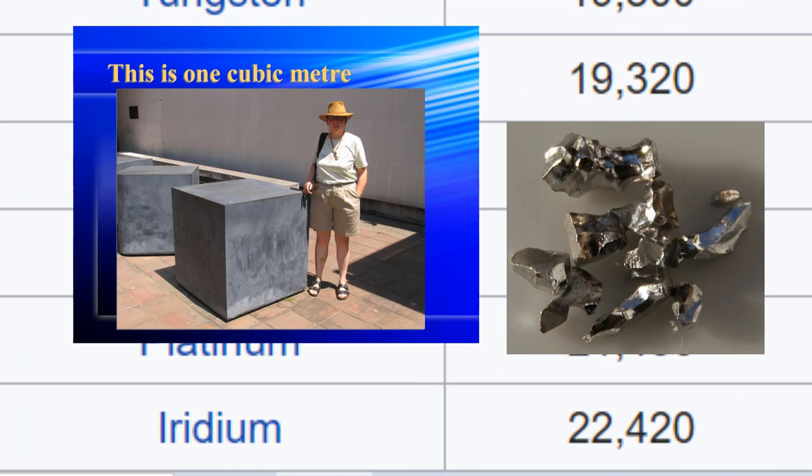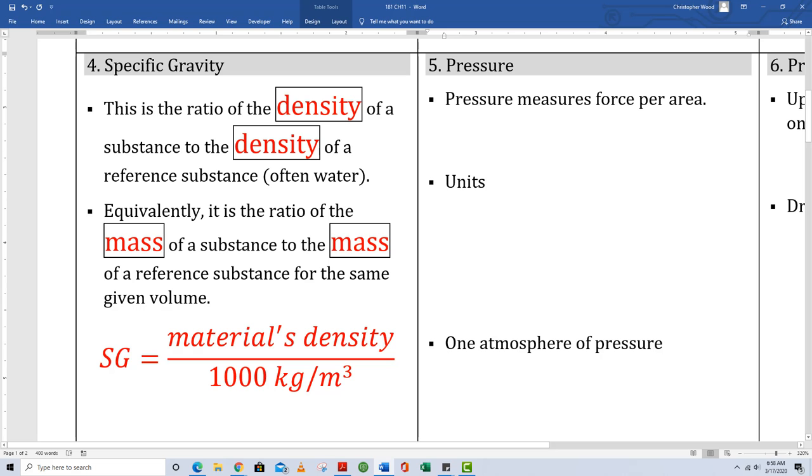Check out iridium. If I had a cubic meter of iridium, its mass would be 22,420 kilograms. Box 4.